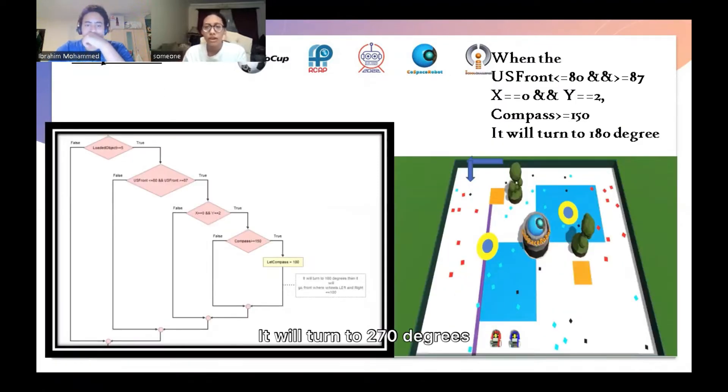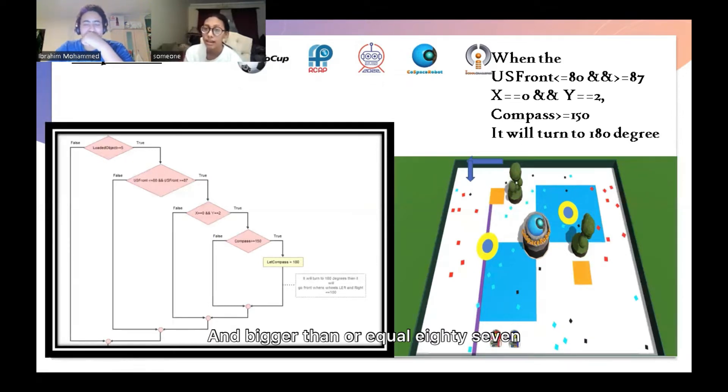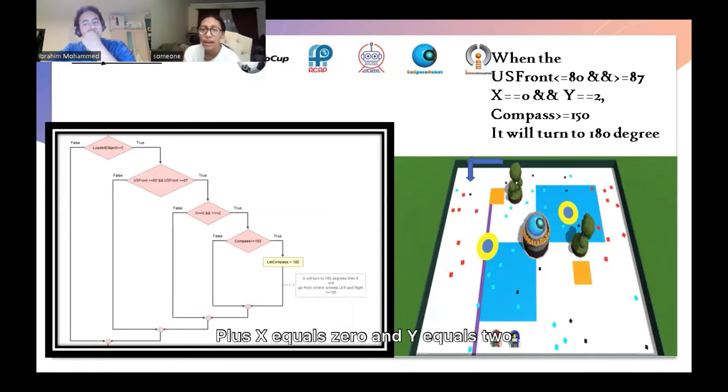Deposit 1: When the ultrasonic front is smaller than or equal 80 and bigger than or equal 87, x will be equal 0, and if y equals 2, and compass will be bigger than or equal 150, then the robot will turn 180 degrees.